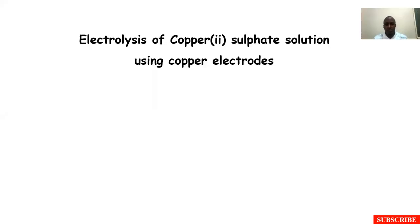Hello and welcome to this video. We are going to look at electrolysis of copper sulfate solution using copper electrodes. In our previous video, we were using graphite as our electrode, but in this case we want to use copper and see what the difference is when we switch the nature of the electrodes. Remember, the nature of electrodes is one of the factors that can determine the products that we produce whenever we are carrying out electrolysis.